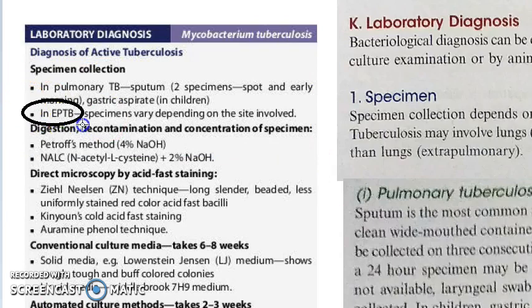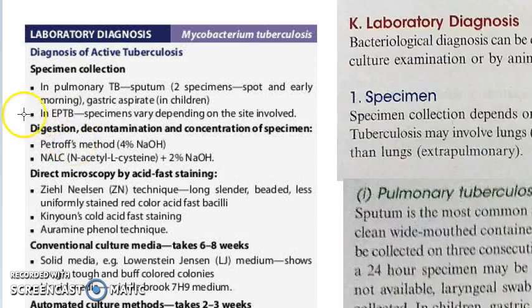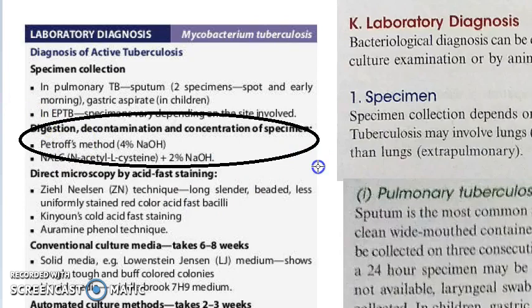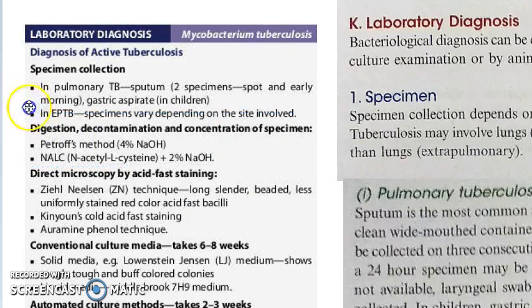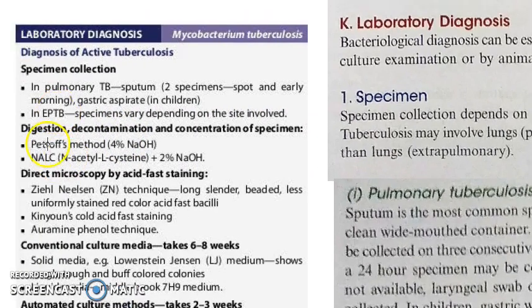If it is extra-pulmonary tuberculosis — that is EPTB — then you will have to use specimens based on the site. But here we are concentrating on pulmonary tuberculosis. Once you have collected the specimen, concentration of the specimen becomes important. There is something called digestion, decontamination, and concentration of specimen.